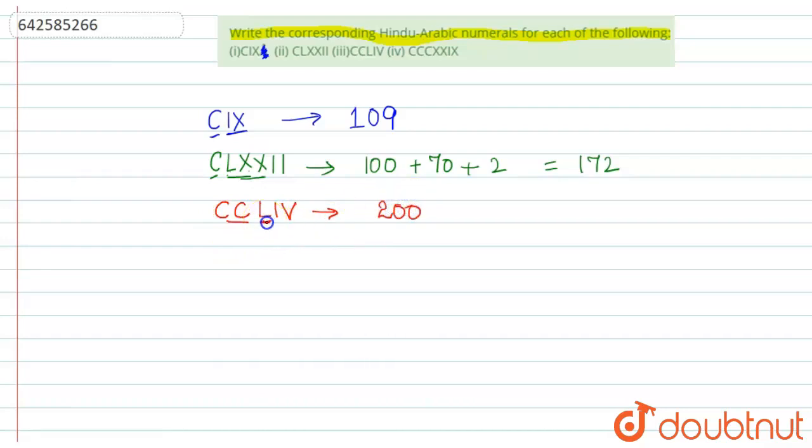So the number is 254. Next number: C C C X X I X. So triple C is for 300.